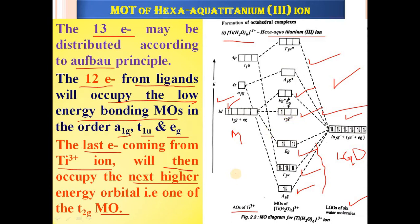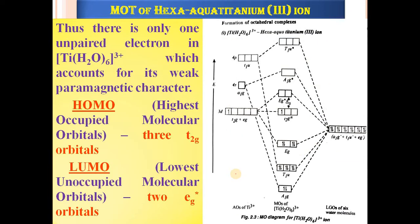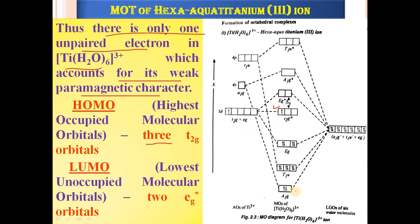There is only one unpaired electron present in [Ti(H₂O)₆]³⁺, which accounts for its weakly paramagnetic character. Another important concept is HOMO — the Highest Occupied Molecular Orbital. From this diagram, the HOMO is the T2G orbital, since electrons fill A1G, then T1U, then EG, and finally T2G.